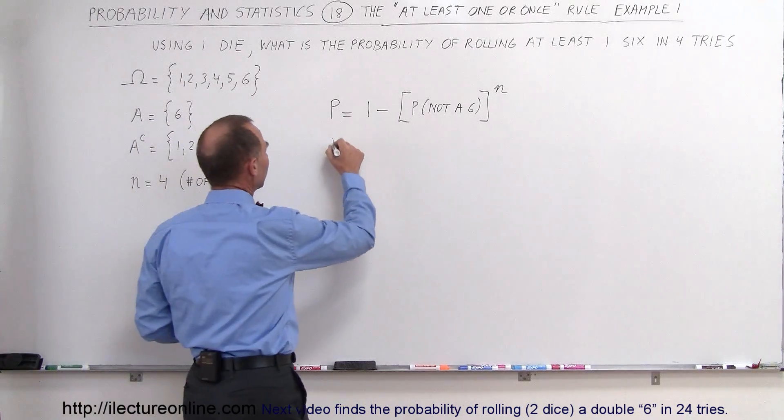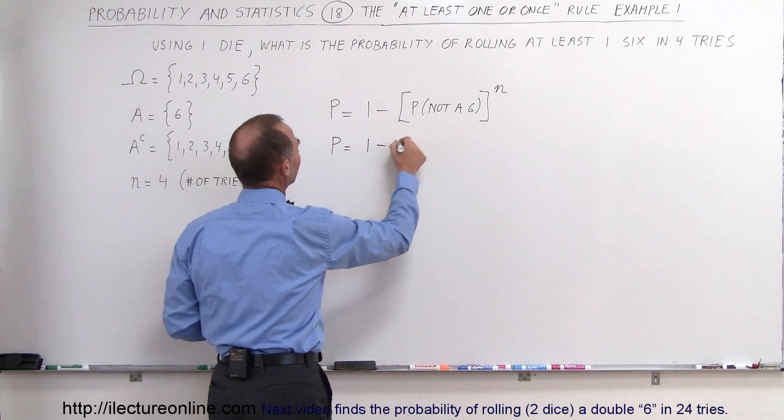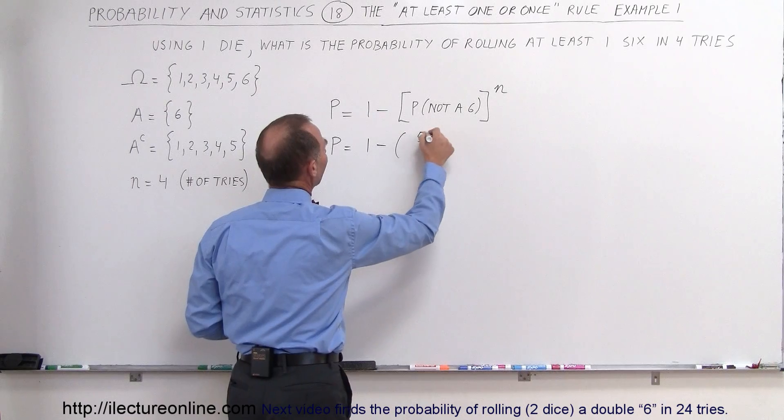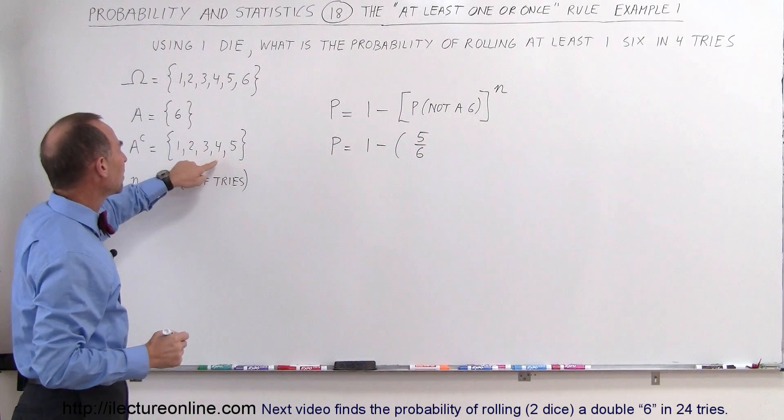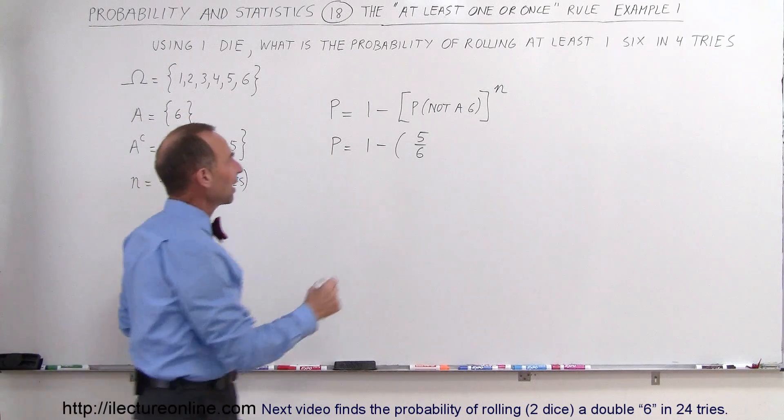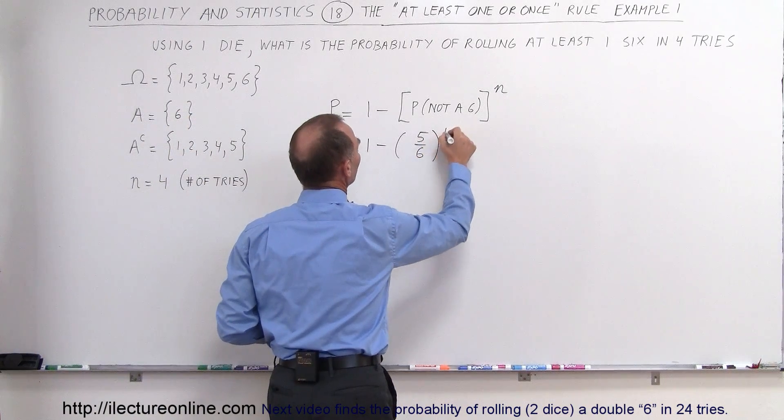So the probability equals one minus five over six—because the complement, the other numbers, would be five out of a total of six in the sample space—and then raised to the fourth power.